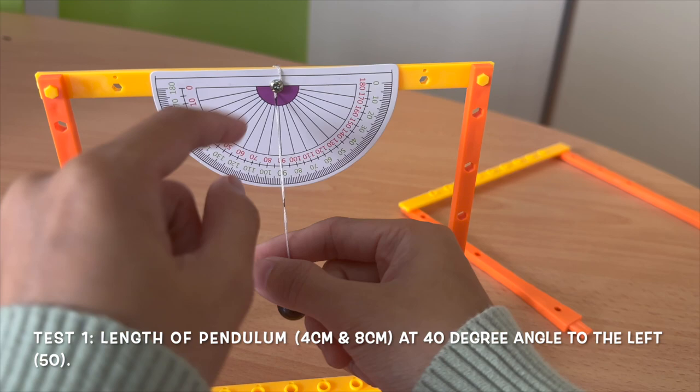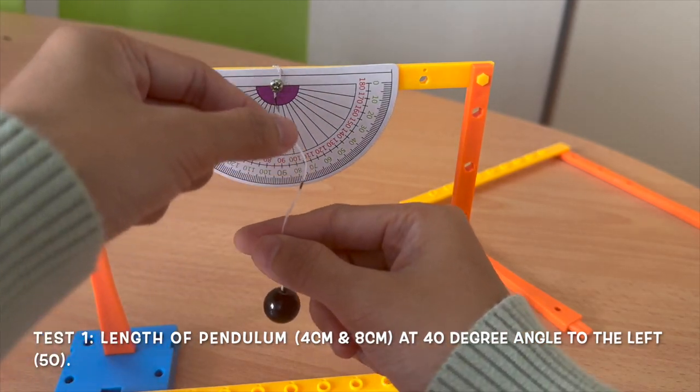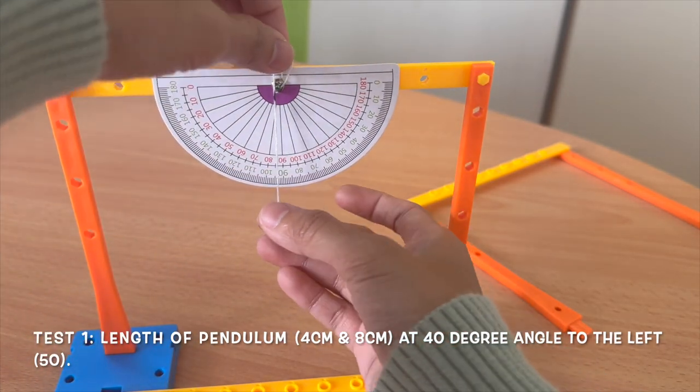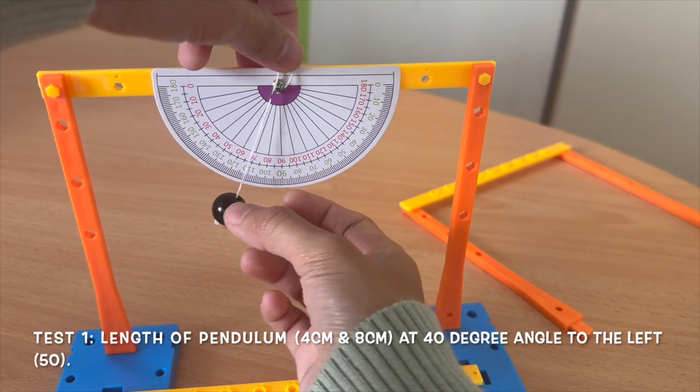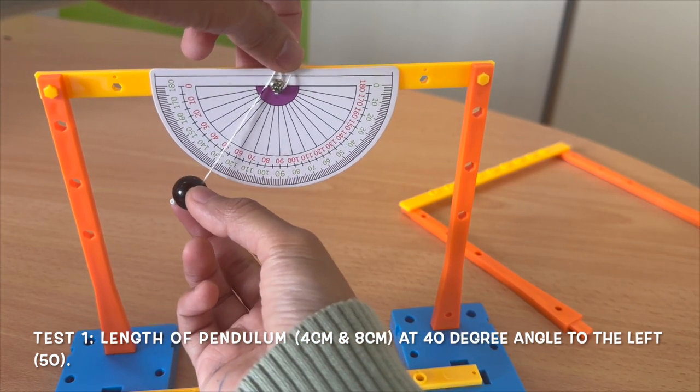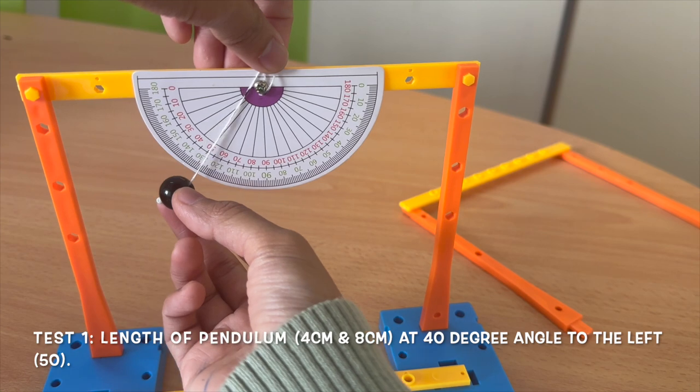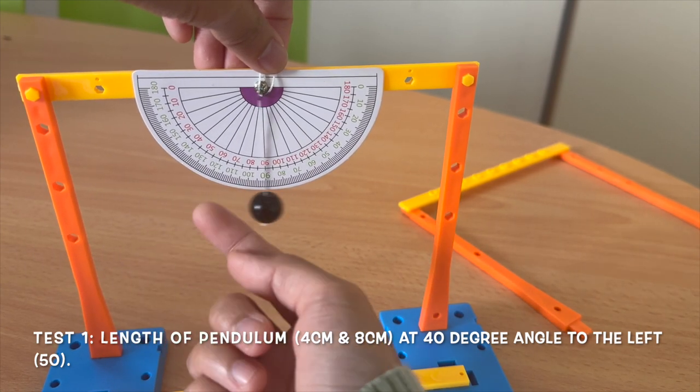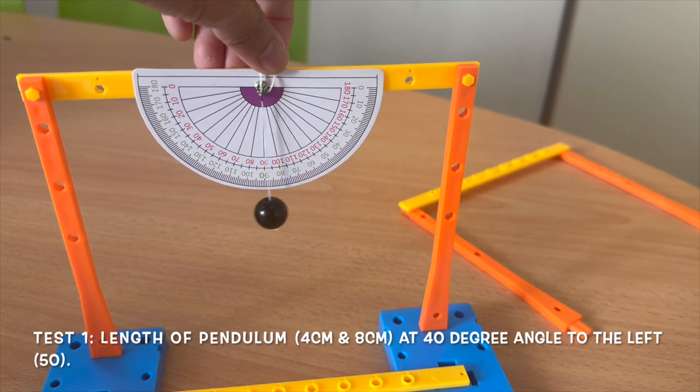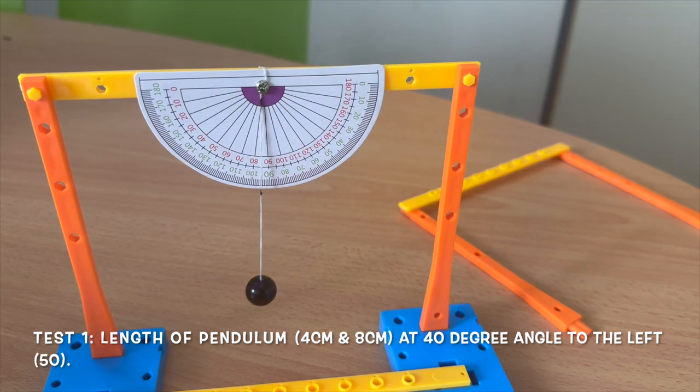Once done, you have to take out the screw and change to 4cm. And record the timing needed for 10 oscillation at 50 degree as well. The angle should be the same. So that is for the first one.